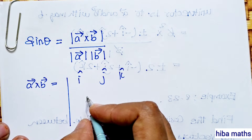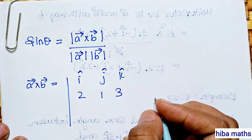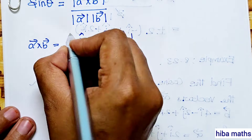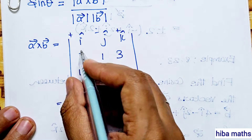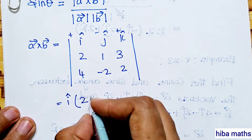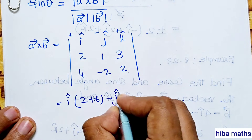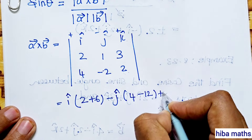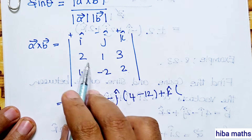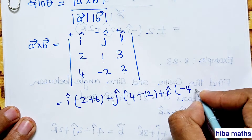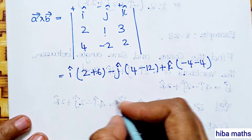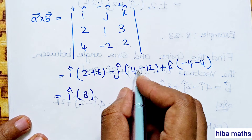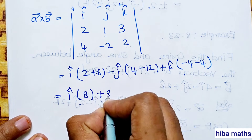Setting up the matrix with i, j, k in the first row; 2, 1, 3 in the second row; 4, minus 2, 2 in the third row. Using plus, minus, plus signs: i into (1 times 2 minus 3 times minus 2) = i into (2 plus 6) = 8i. Minus j into (2 times 2 minus 3 times 4) = minus j into (4 minus 12) = plus 8j. Plus k into (2 times minus 2 minus 1 times 4) = k into (minus 4 minus 4) = minus 8k.